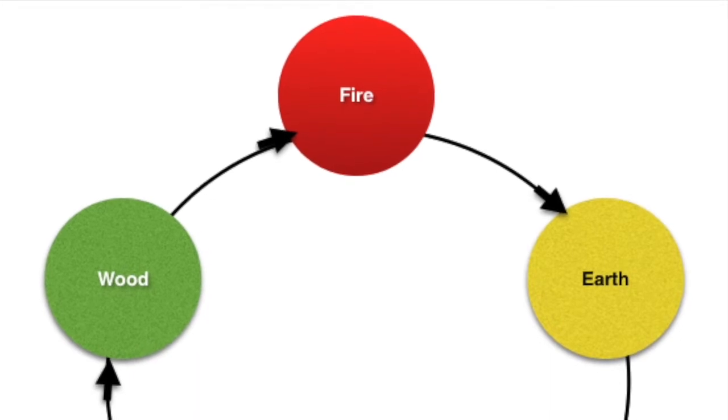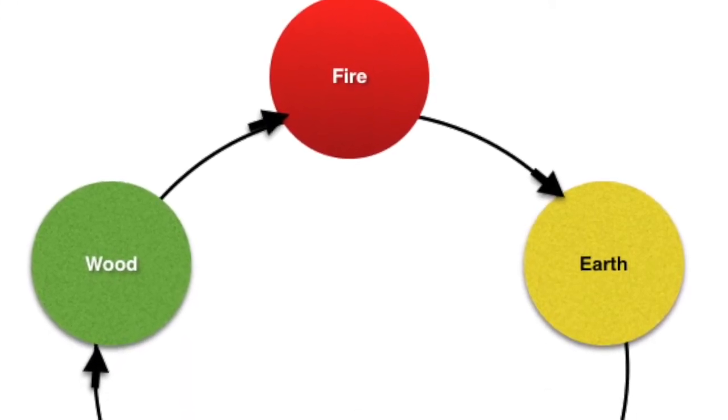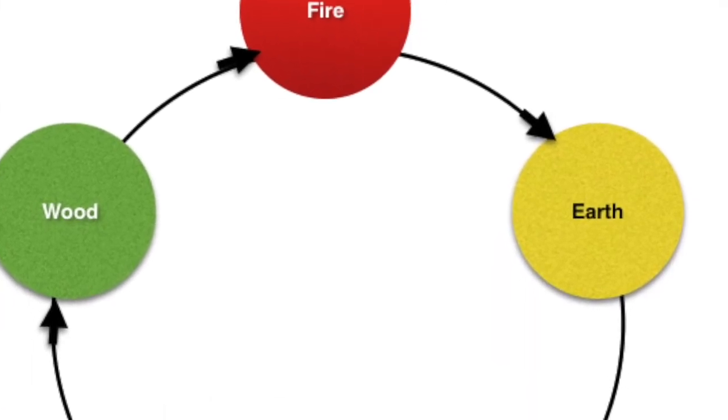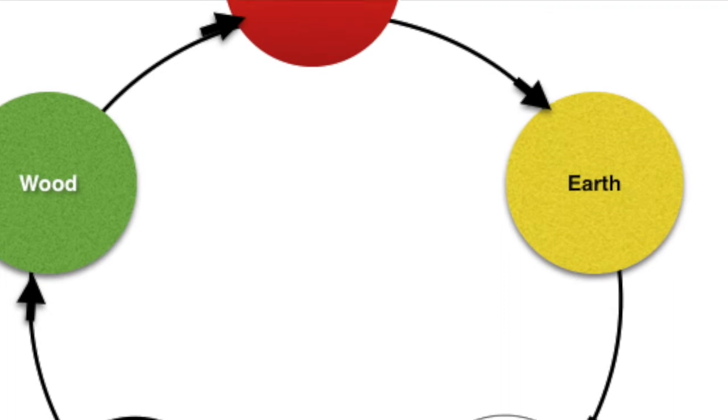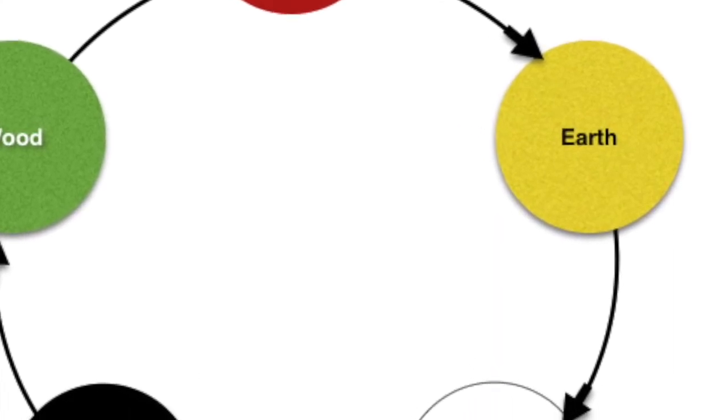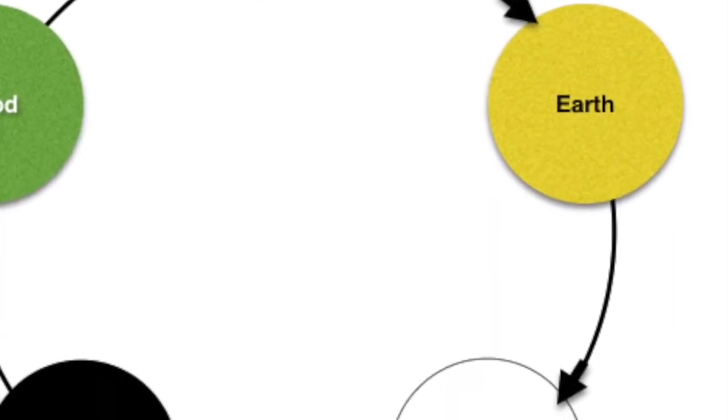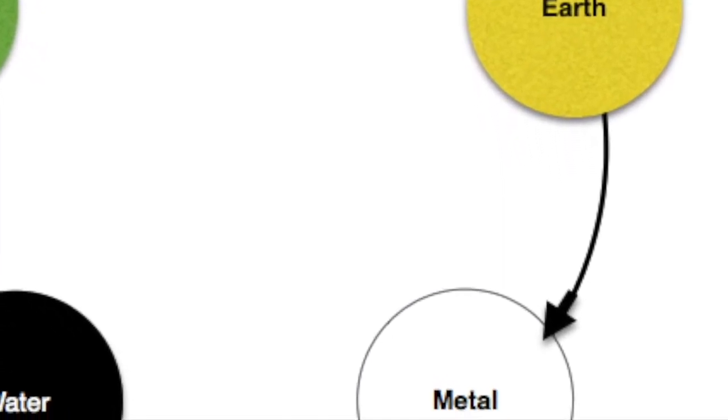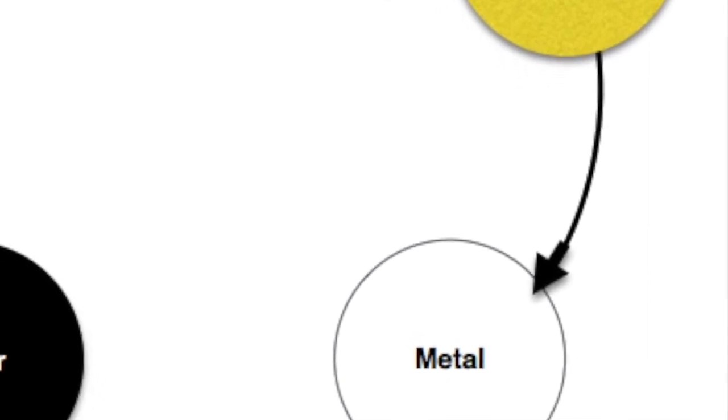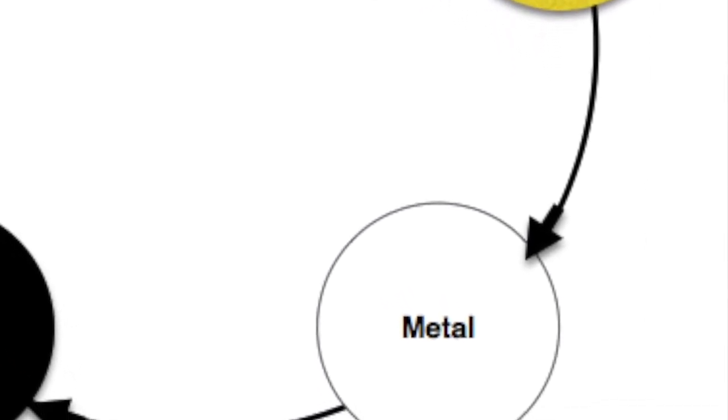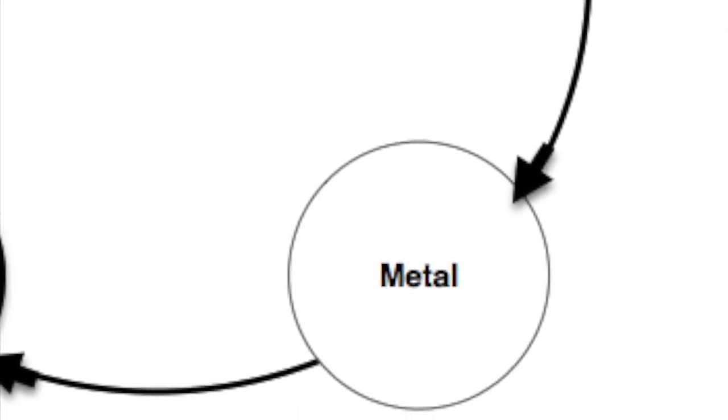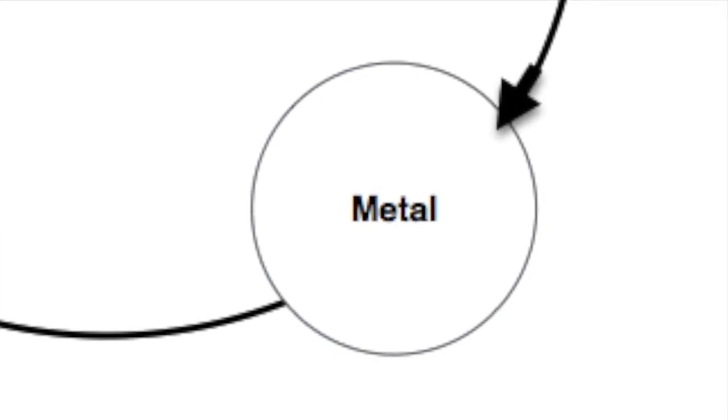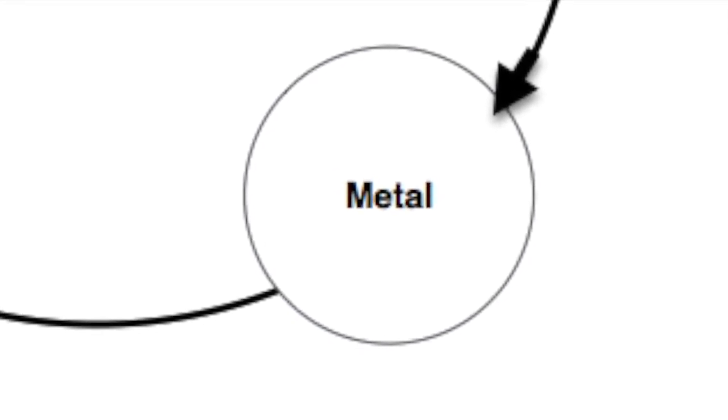Autumn or fall is the season ruled by metal. Metal is adulthood, and associated with the emotion of grief or sadness. As we transition through this phase, we see the passing of generations that have come before us, and often look back with nostalgia on our own childhoods, or see children that we've had reaching their own adulthood and moving out of the nest. Metal's color is white, and the direction is west. The taste of food associated with the metal element is umami, which is savory or pungent foods.